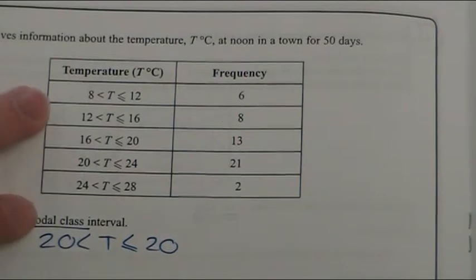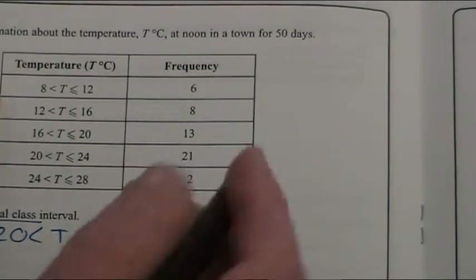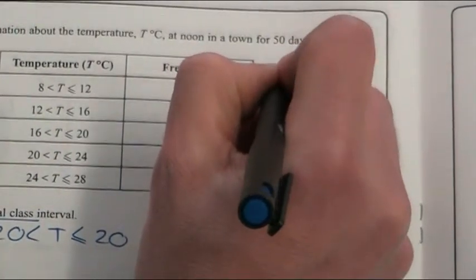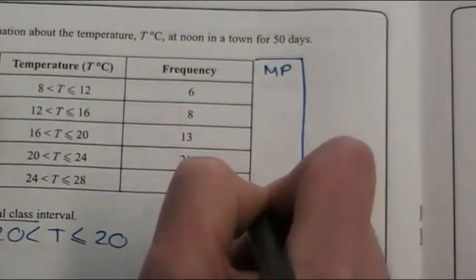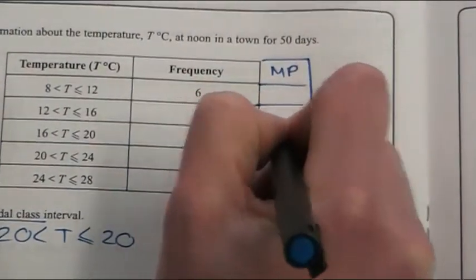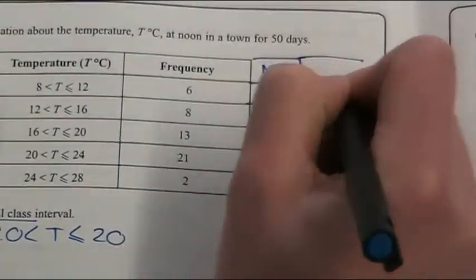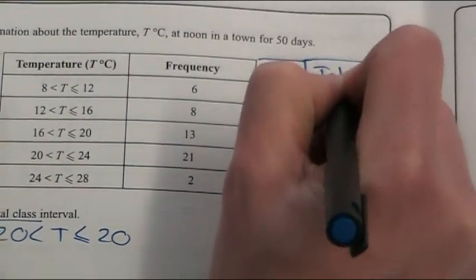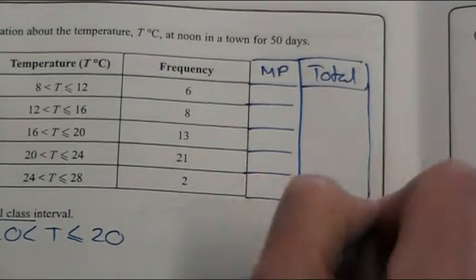So, I'm going to form two extra columns here. This one's going to be midpoint. I'm going to shorten it to just MP. And then I'm going to have a total column here. I'll move my hand out of the way so you can see what I'm doing.